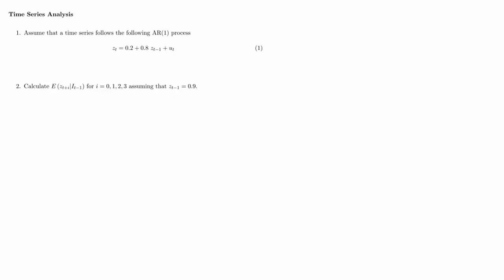This question is about an AR(1) model. Here's our AR(1) model for Zt, which is a function of Zt minus 1. You can see our constant and our AR(1) coefficient. From that, you can calculate the unconditional expectation of Zt as the constant divided by 1 minus the AR(1) coefficient, and that is equal to 1.